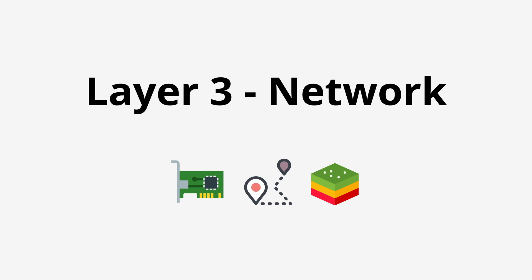Welcome back. Now that we've covered the physical and data link layers, next we need to step through layer 3 of the OSI model, which is the network layer.